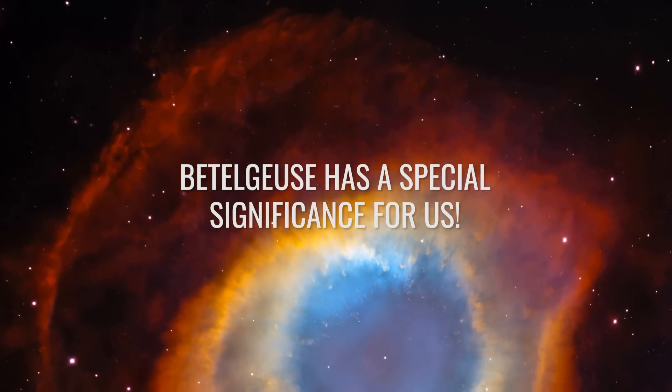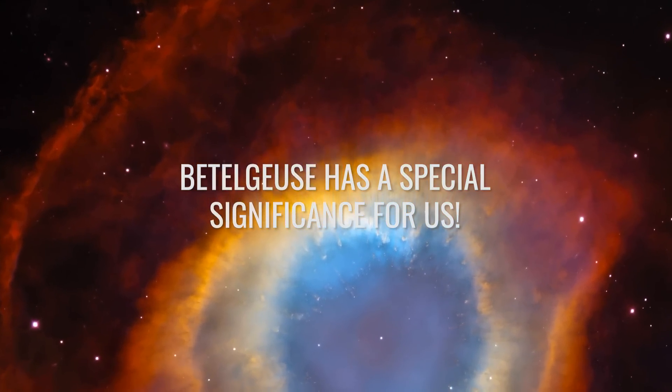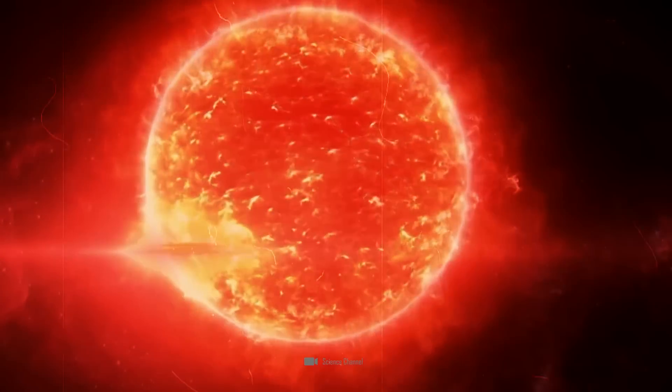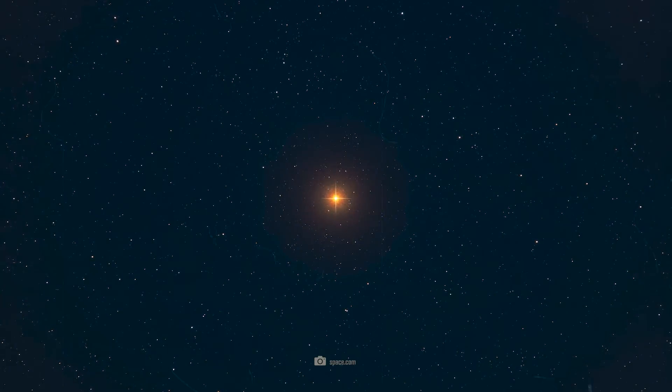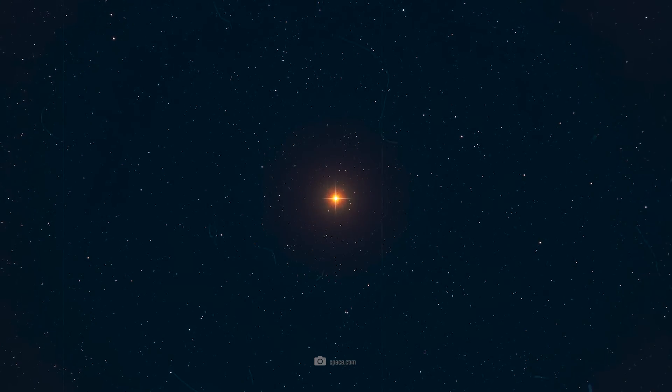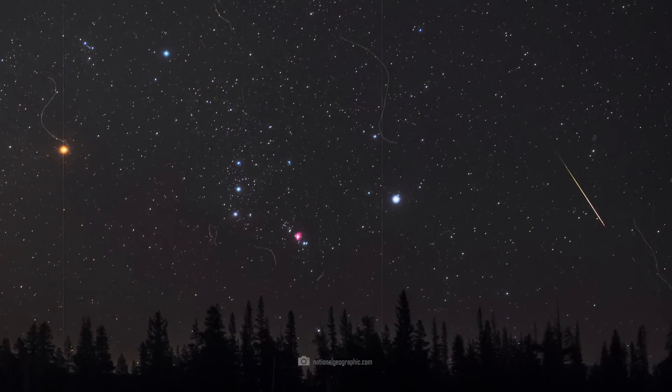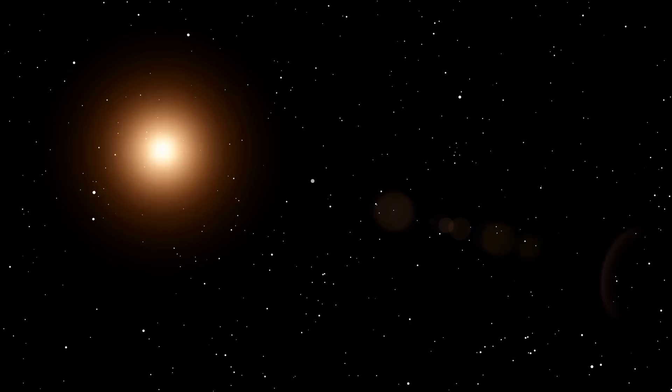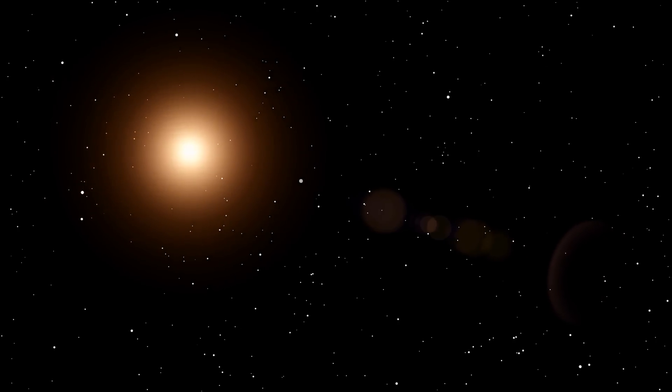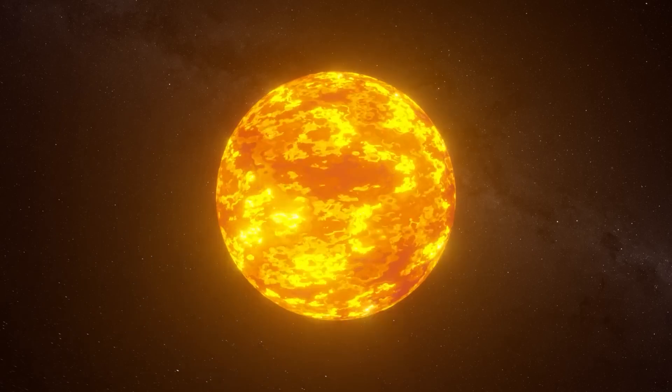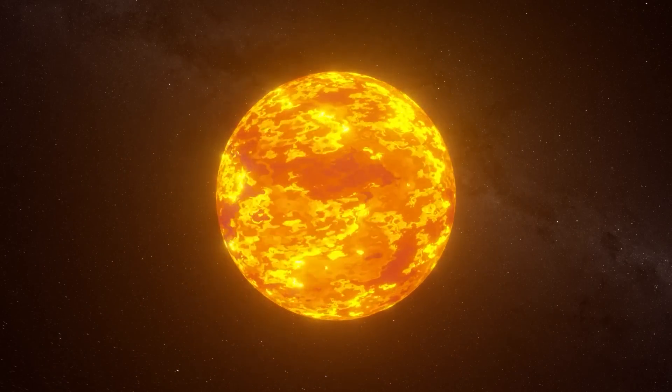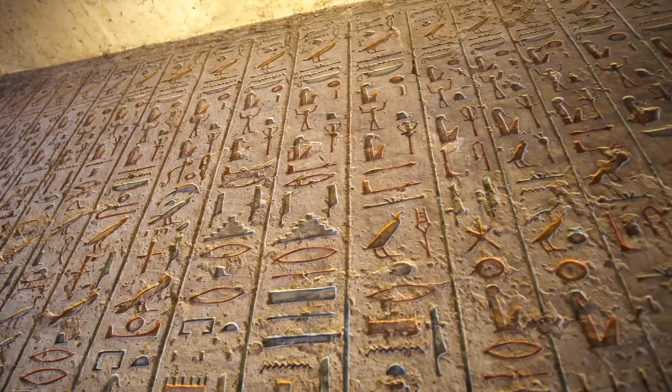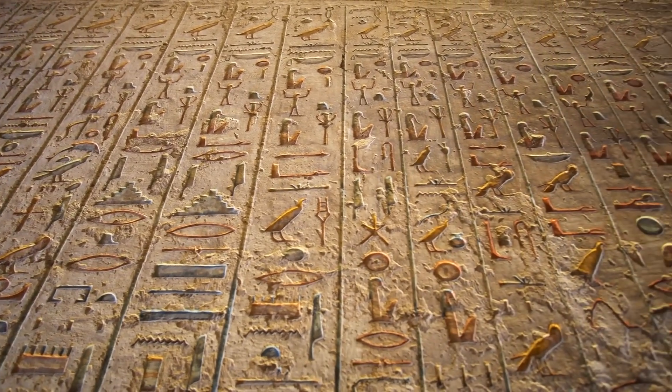Betelgeuse has a special significance for us. Betelgeuse is not just any star. It's one of the brightest stars in the constellation Orion, and this has always had a special meaning for humans. Ever since our species has looked up at the sky, this star has been particularly huge, red, and conspicuous. Betelgeuse probably bloated into a red giant more than 100,000 years ago. So we don't know it any differently. But it's only recently that we have become aware of its peculiarity and its fate.